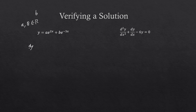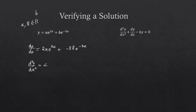Differentiating y, dy/dx: differentiating the first term, the differential of 2x is 2, so I bring that 2 down the front giving 2ae to the 2x, plus differentiating the second term I'm going to have minus 3Be to the minus 3x. Now I've got to find the second derivative, so differentiate that again. The first term brings the 2 down to give 4ae to the 2x, and bringing the minus 3 down gives positive 9Be to the minus 3x.